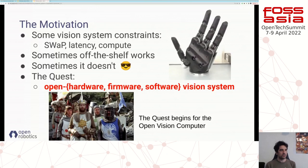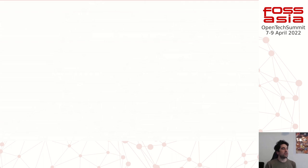This applies to cases where you have very critical size, weight, and power constraints, latency constraints, computational constraints, or hardware constraints where you need to integrate specific hardware. So we embarked a long time ago on a quest to create an open-source computer vision system — from both hardware, firmware, and software perspectives. The project has been going on for about seven years, with the first five years focusing on the FLA program.